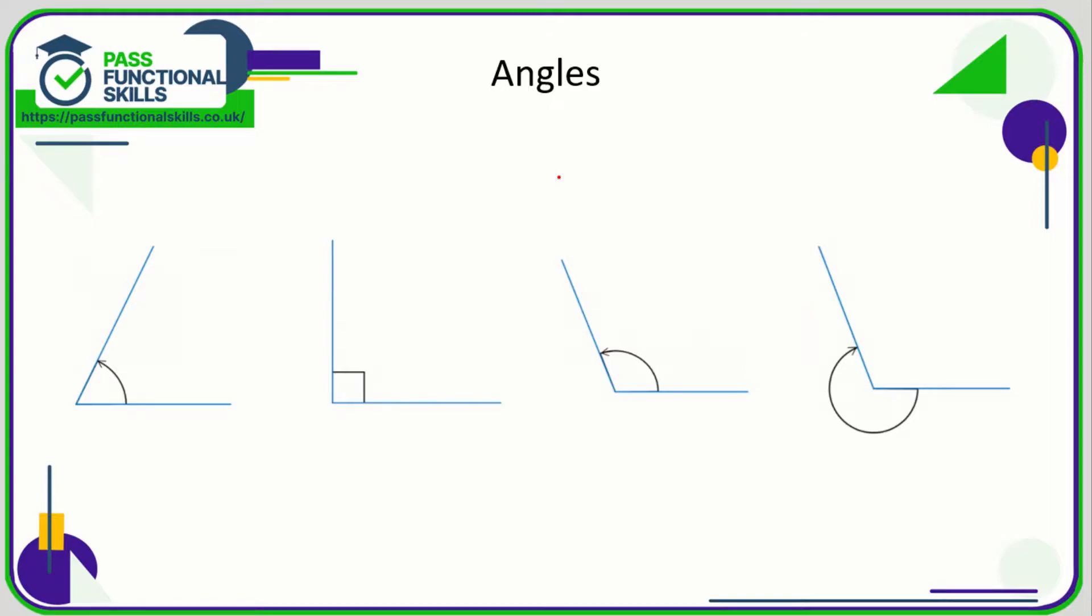Let's take a look at angles and bearings. Now an angle is formed when two straight lines come to a point. Straight line, straight line, there's an angle. Multiple examples demonstrate this basic principle.